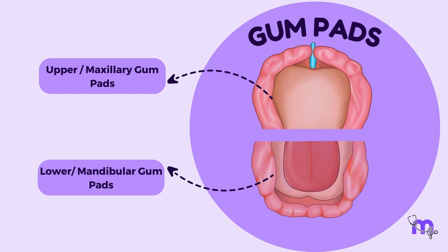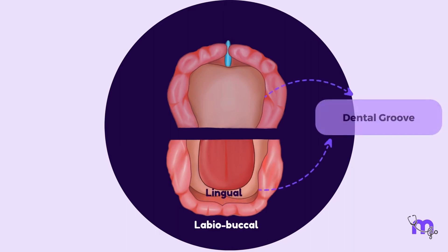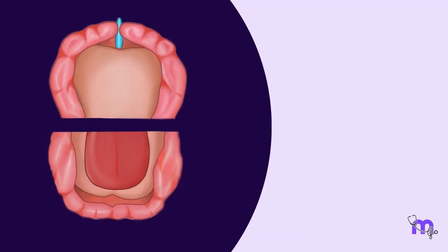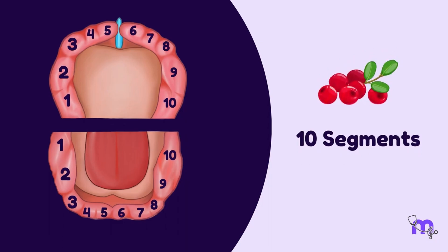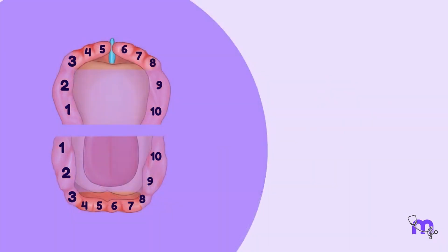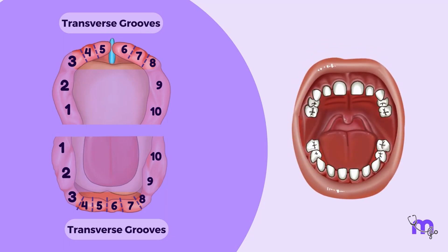They develop as the labio-buccal and the lingual parts, separated by the dental groove. They are further divided vertically into 10 cranberry-like segments by the transverse grooves, each corresponding to an unerupted deciduous tooth.